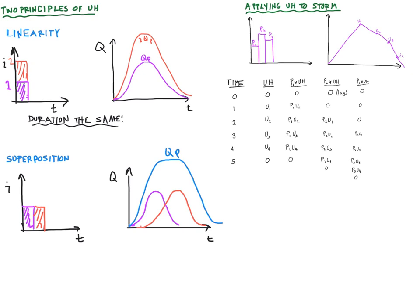The last step here is to apply superposition and add these all together for each corresponding time. So here is the total storm hydrograph. You can see I have applied both linearity, and I do that by multiplying the ordinates of the unit hydrograph by the total rainfall excess represented by P1, P2, and P3, and then I've applied superposition to add all three parts of the storm coming through.